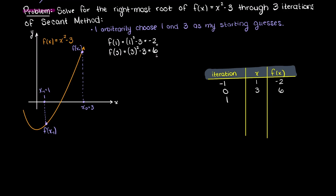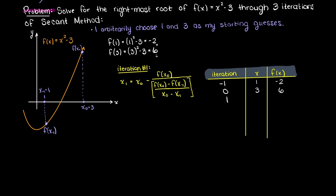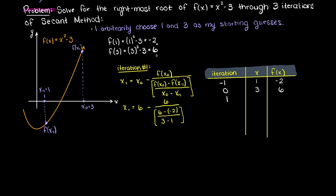Now we are ready to solve for the first iteration using the secant method. Using our general secant method formula, we can just adjust the x values to fit our first iteration. Now that we have the formula written like this, we can simply fill in the variables as we already have the values from earlier. After doing this, we are left with an x value of 1.5. Let's add that to our table and evaluate the function at this x value.